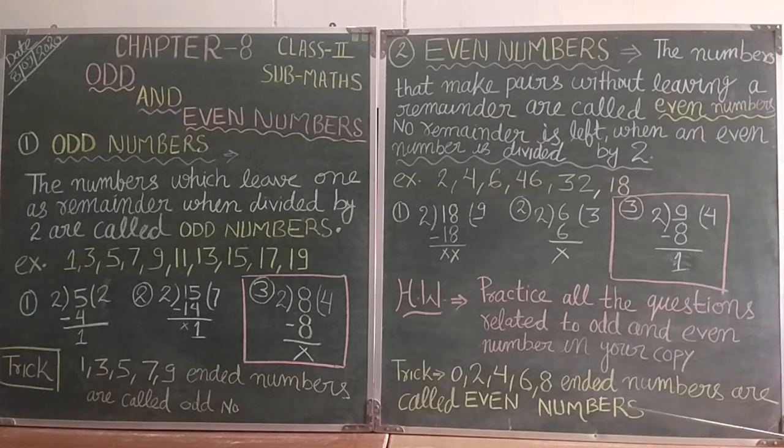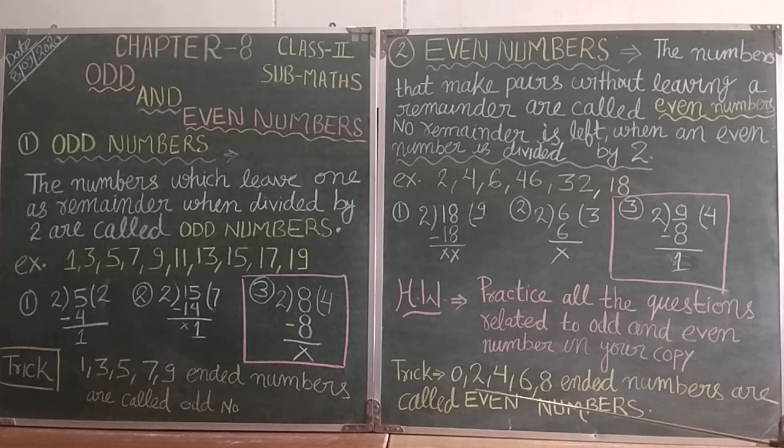If we check the last digit of our numbers and see 0, 2, 4, 6, or 8, then those are even numbers. Any numbers ending in 0, 2, 4, 6, 8 are called even numbers, okay?